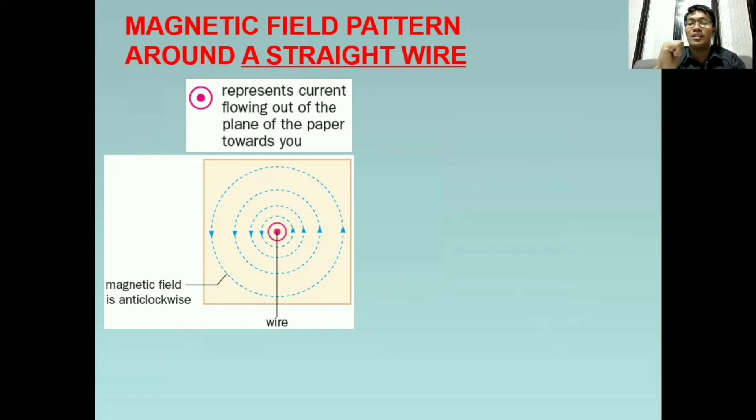Anong magiging magnetic field pattern natin kapag towards me or going out of the paper? Kung may kitan ninyo, it is anti-clockwise or counter-clockwise. Para lang yang current moving upward. So tinuro mo sa sarili mo ngayon, so it is counter-clockwise. And that is, again, the direction of the magnetic field.